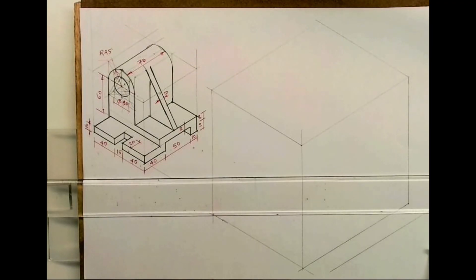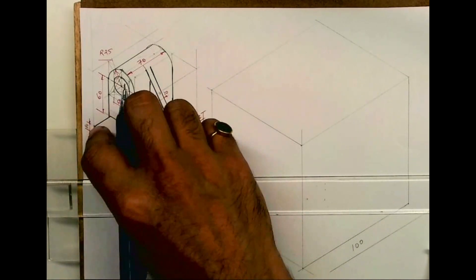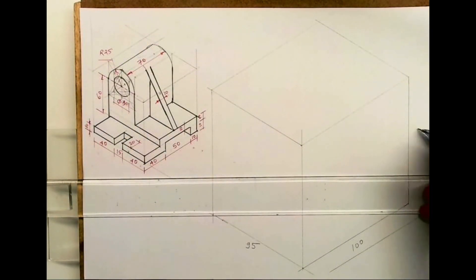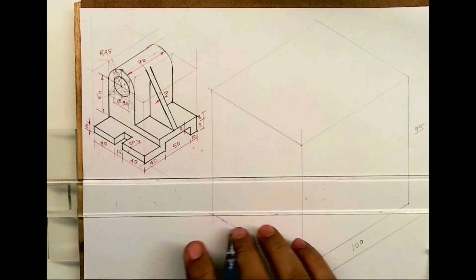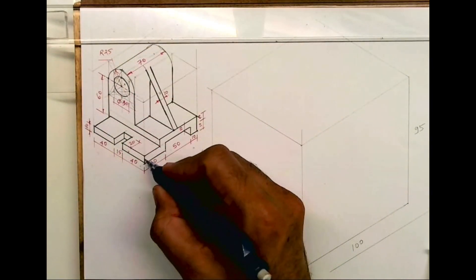Welcome to technical drawing. Today we'll see this sum in isometric. In this, length is 100 which will come on right hand side, width is 95, and height is 70 plus 25, which is 95. First we'll start with this part.